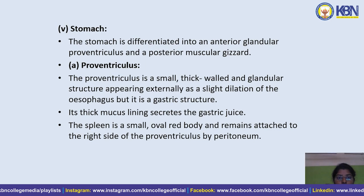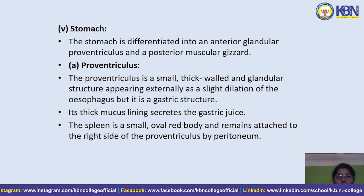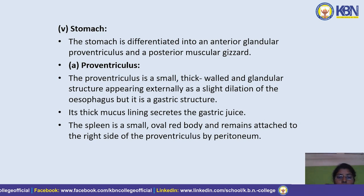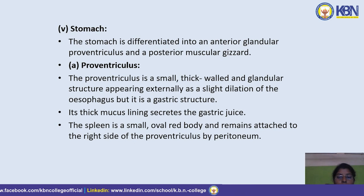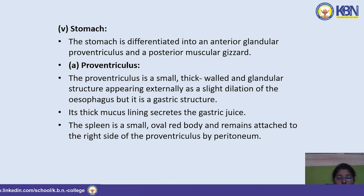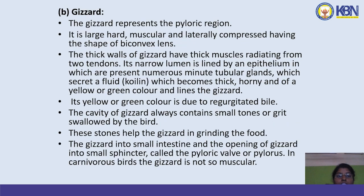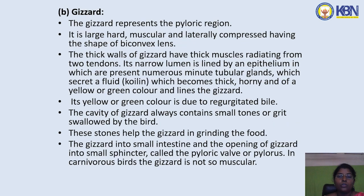The stomach is differentiated into an anterior glandular proventriculus and a posterior muscular gizzard. The proventriculus is a small, thick-walled, glandular structure appearing externally as a slight dilation of the esophagus. Its thick mucus lining secretes gastric juice. The spleen is a small, oval, red body attached to the right side of the proventriculus by peritoneum.